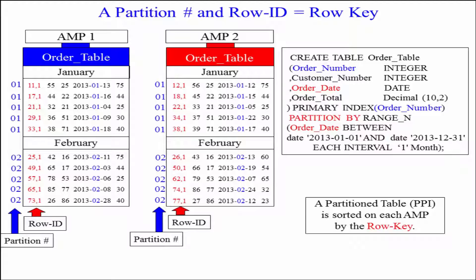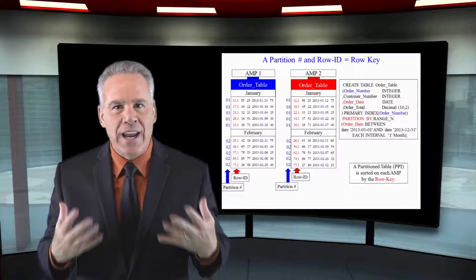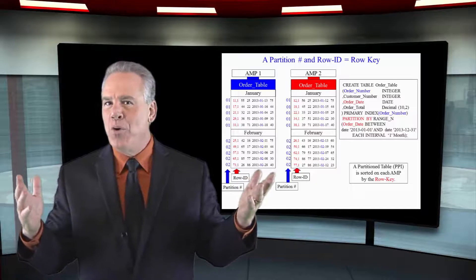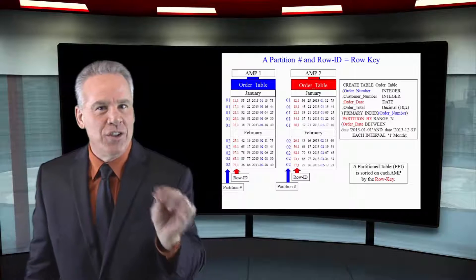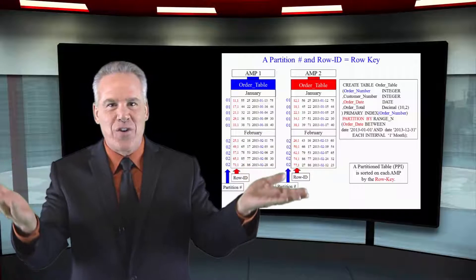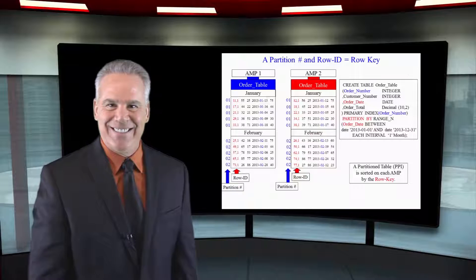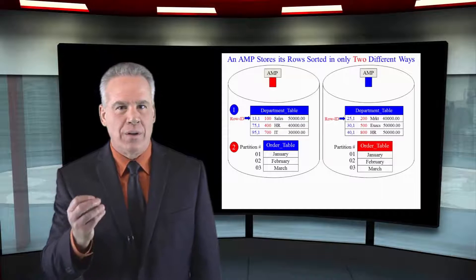I like to think of it more like this: you've got the partition and the row ID, and that's the real sort key here. So let's review. How would Teradata AMPs sort their data? Two ways. In a normal table, they will always sort by the row ID. In a partitioned table, they're going to sort by the row key — partition first, and then the row ID within the partition. Teradata AMPs only sort their data two ways: row ID or row key.